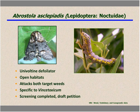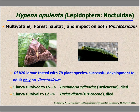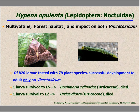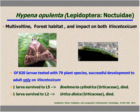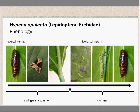The next moth, Abrostola asclepias — a unifolding defoliator that occurs in open habitats — also works on both target weeds. In host range testing it was specific to Vincetoxicum, screening is completed, and we have a petition ready to go to the regulators. We have not submitted it because we've been focused initially on Hypena opulenta. Hypena is multivoltine — it has multiple generations — and has impact on both Vincetoxicum. In summarizing its host range testing: 820 larvae were tested on 79 different plant species. Successful development to adult occurred only on Vincetoxicum. One larva survived to fifth instar on Bohemora and one survived to second instar on Urtica, but both subsequently died. Based on this very specific result, we moved forward with petitioning.